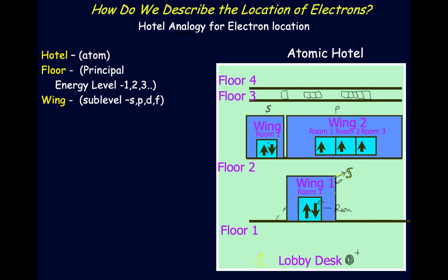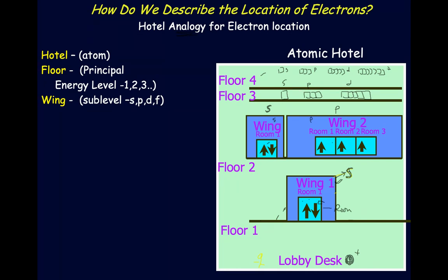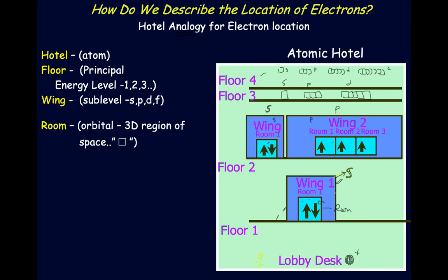An S-wing always has one box. A P-wing always has three boxes. A D-wing has five. And floor four's F level would have seven. So floor one has one wing, floor two has two wings, floor three has three wings, and floor four has four wings. The names of the wings are S, P, D, F. A room — the orbital — is the 3D region of space where electrons are going to be. Each orbital can only hold two electrons, represented by arrows. That's the pattern we're going to follow.